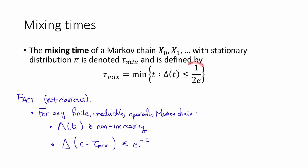What this means is that we can turn this 1 over 2e into e^(-c), if we like, by just taking some constant multiple more steps.